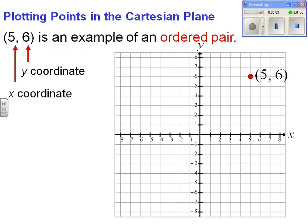Plotting points in a Cartesian plane requires an ordered pair. Here, (5, 6) is an example of an ordered pair. The first number, 5, is the x-coordinate and the second one is known as the y-coordinate.